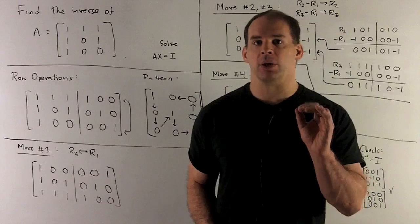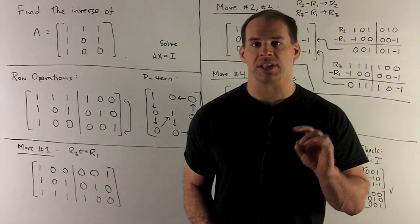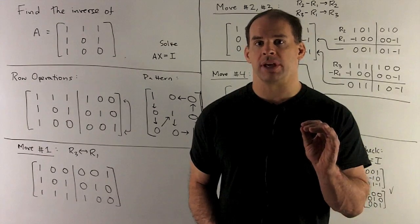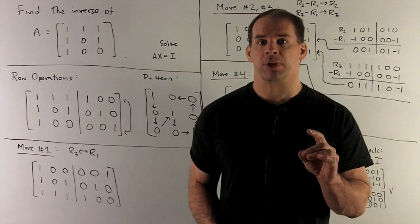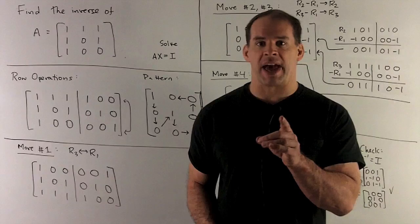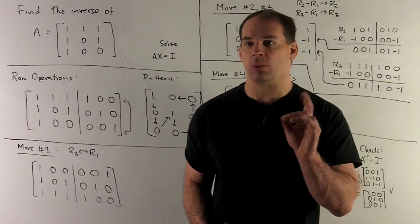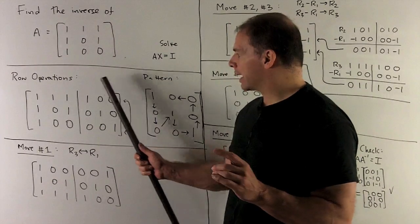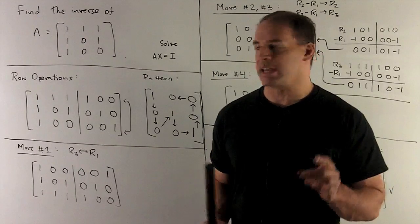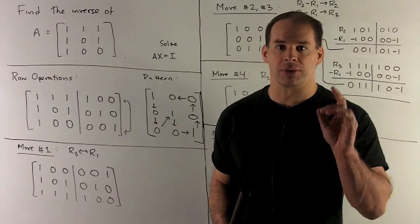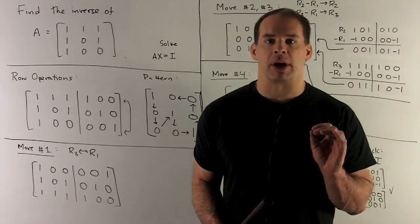Now, what we're trying to do here is find a matrix X such that A times X equals the identity. The long way to do this is to break it up into three systems of linear equations. For this matrix X with three columns, I could have A times column 1 equals first column of the identity matrix, A times column 2 equals second column of the identity matrix, A times column 3 equals third column of the identity matrix. There's no need to separate all that out.